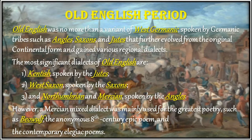3. Northumbrian and Mercian, spoken by the Angles. However, the Mercian mixed dialect was mainly used for the greatest poetry, such as Beowulf, the anonymous 8th-century epic poem, and the contemporary elegiac poems.